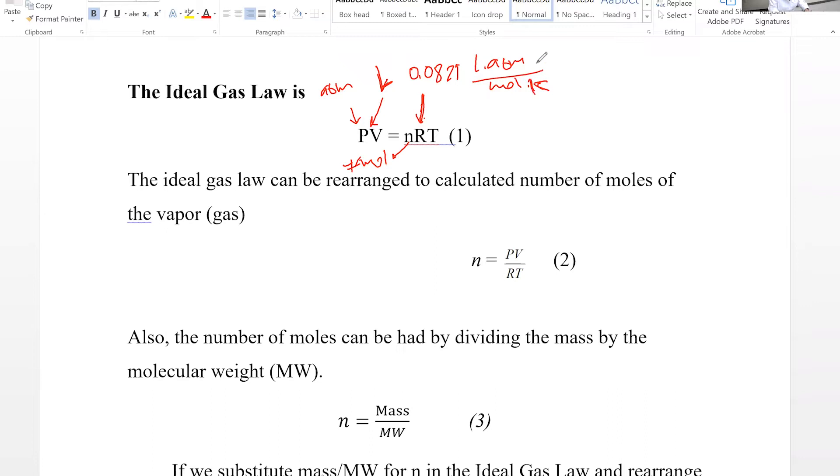R is a universal gas constant, 0.0821 or 0.06 liter atm per mole per kelvin. If you pay attention to the unit for R, that kind of dictates the unit for everything else. Temperature cannot be celsius, temperature must be kelvin because this unit for R calls for kelvin temperature.